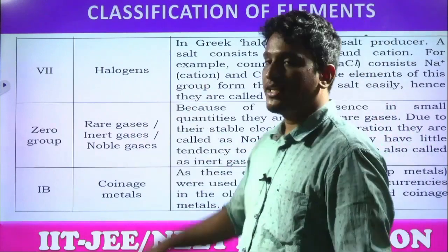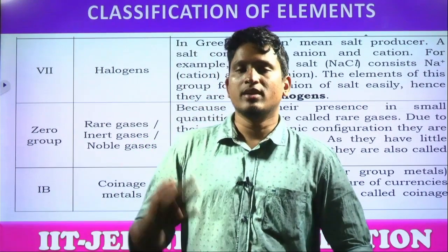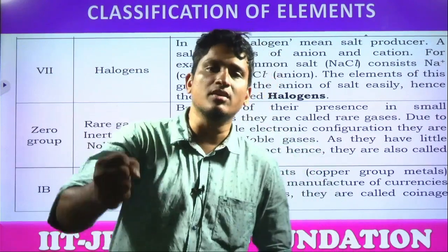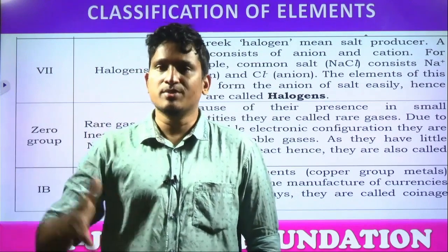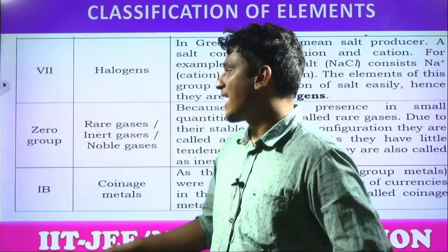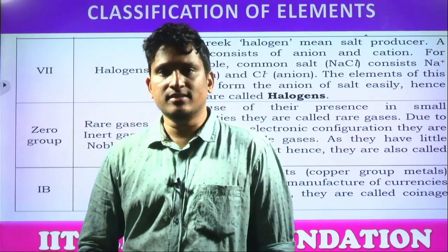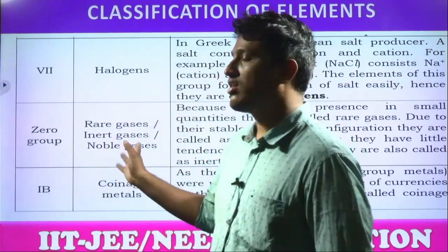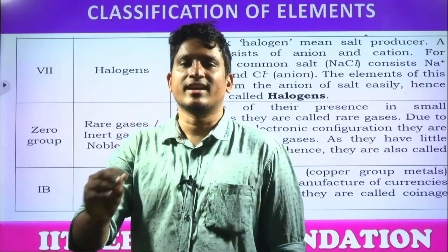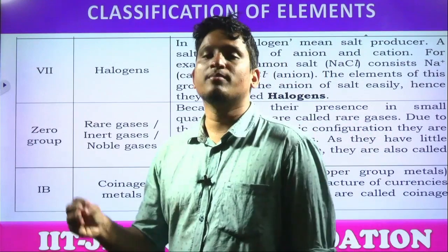Group 17 elements are called halogens. Halo means sea salt. These group elements — fluorine, chlorine, bromine, iodine — when they react with metals, they form salts, and these salts are dissolved in sea water. That is why halogens means sea salt generators. Examples include sodium chloride, magnesium chloride, sodium iodide, potassium bromide. The 18th group — also called zero group in old notation — elements are called noble gases, inert gases, rare gases, or aerogens. They have completely filled electronic configurations, so they are chemically unreactive and very rare.